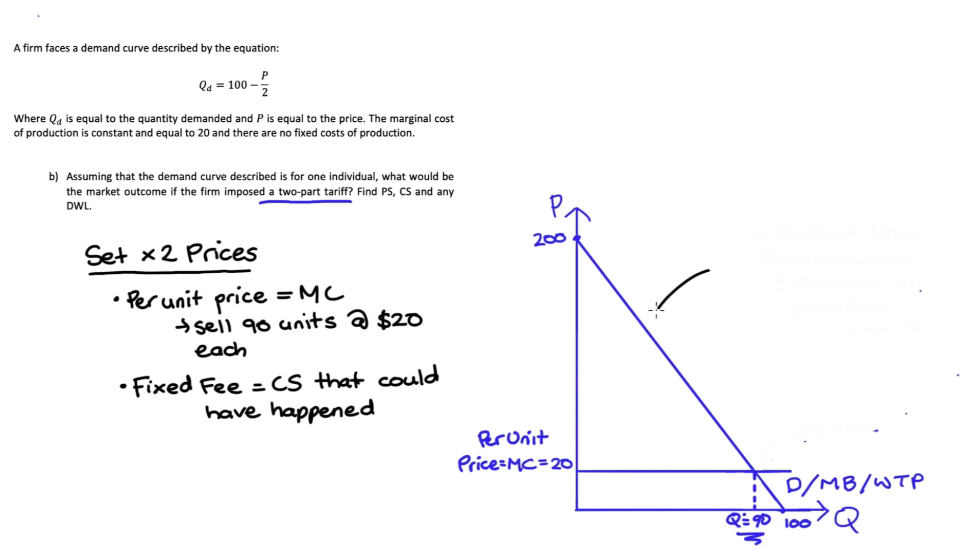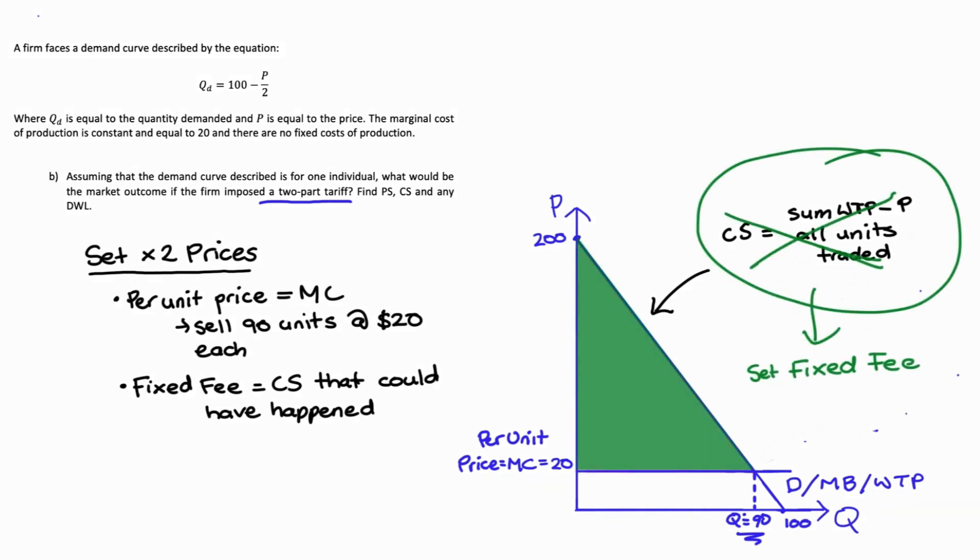Since in perfect competition price equals marginal cost, just like in the case of our two-part tariff, except in perfect competition that's our only price. So if we had only the price per unit, then our consumer surplus would be equal to this red area here. When we price using a two-part tariff, however, the firm is going to take that amount of consumer surplus and turn it into a fixed fee.